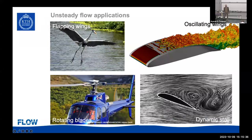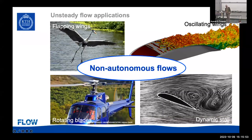Essentially all of these applications are unsteady: flapping wings, rotating blades, helicopter blades, wind turbines, oscillating wings, and dynamic stall. All of these can be designated non-autonomous flows in the sense that there's an inherent time dependence — you cannot take a time average and expect it to converge to something useful because things change inherently in time. The non-autonomous flows we're going to look at are oscillating wings and dynamic stall.